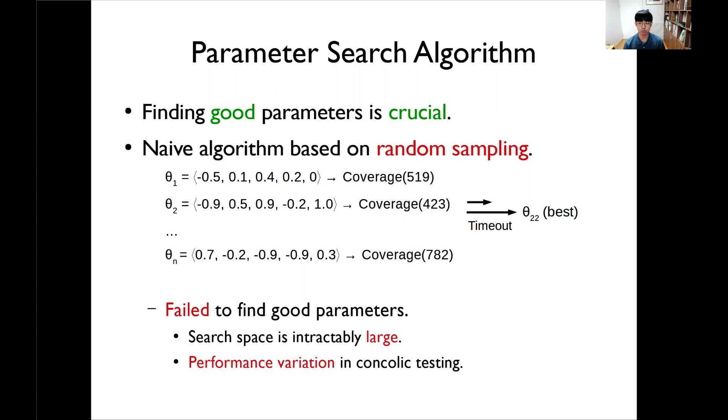So finding a good one is crucial in our work. A very simple approach for this is to use random sampling algorithms. This approach randomly samples the parameters and evaluates the coverage of each parameter and returns the best parameter for a given time budget. But we found that this naive algorithm failed to find good parameters in reasonable time because the search space of a 40-dimensional vector is interactively large. So we need an effective parameter search algorithm specialized to concolic testing.